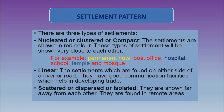The third type of settlement pattern is known as scattered, also known as dispersed or isolated. These settlements are shown far away from each other and are found in remote places. Now let us discuss one by one how these settlement patterns are shown on a topographical map.